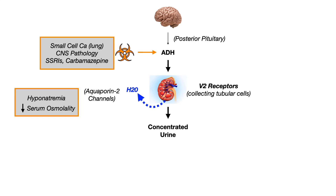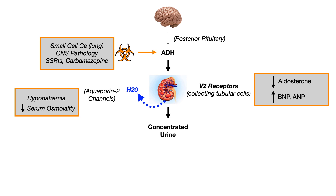Then a dangerous cycle begins: the body becomes hyponatremic because it's reabsorbing so much water, and therefore the serum osmolality falls precipitously. The body tries to counteract this and wants to get rid of its free water. In order to do so, it will turn off aldosterone — because the body wants the water to follow the salt out through the urine. So you'll see decreased levels of aldosterone in SIADH, and consequently increased levels of BNP and ANP.